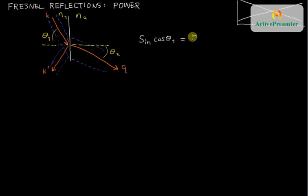And that's going to be equal to the amount of power coming off of that same area due to the reflected beam, which makes the same angle theta 1 with the interface, plus the transmitted beam. Now it makes an angle theta 2 with the interface. So this becomes the power balancing equation.